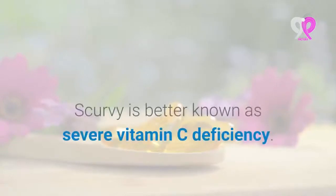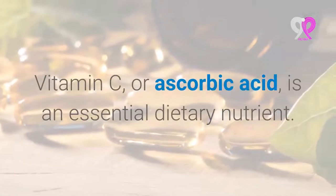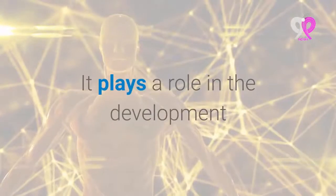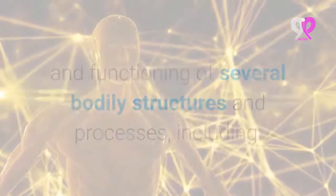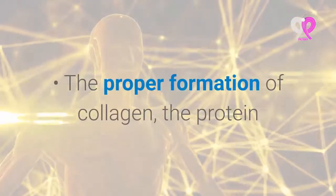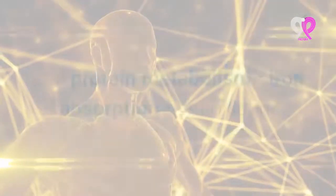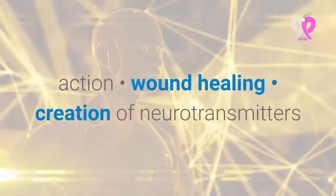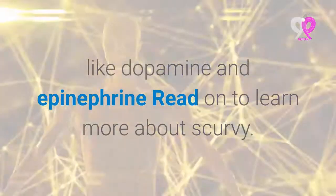Scurvy is better known as severe vitamin C deficiency. Vitamin C, or ascorbic acid, is an essential dietary nutrient that plays a role in the development and functioning of several bodily structures and processes, including the proper formation of collagen — the protein that helps give the body's connective tissues structure and stability — as well as cholesterol and protein metabolism, ion absorption, antioxidant action, wound healing, and creation of neurotransmitters like dopamine and epinephrine.